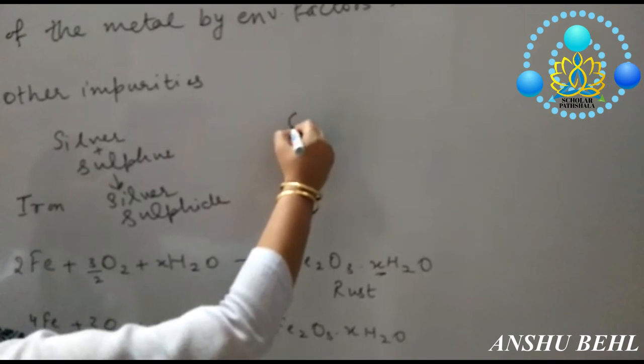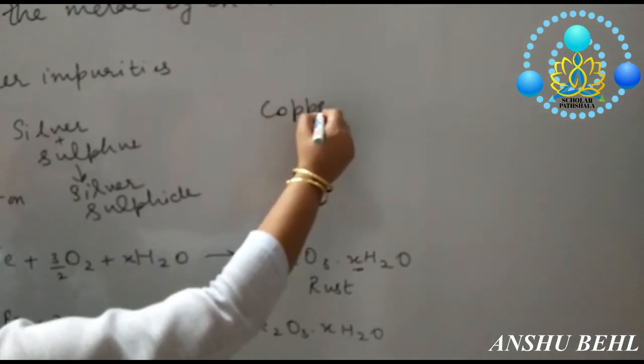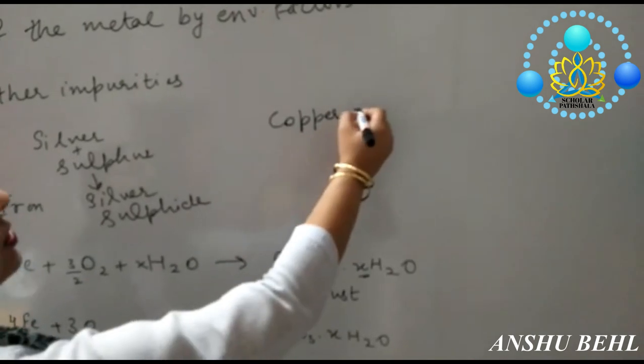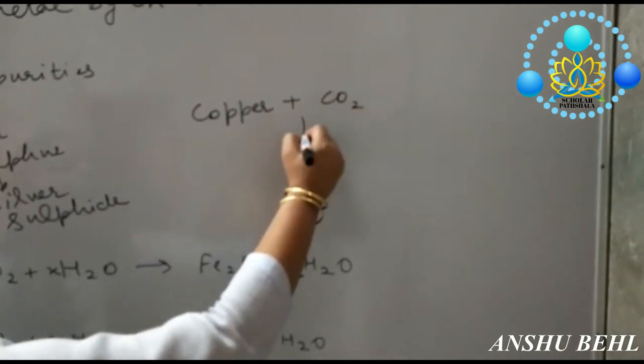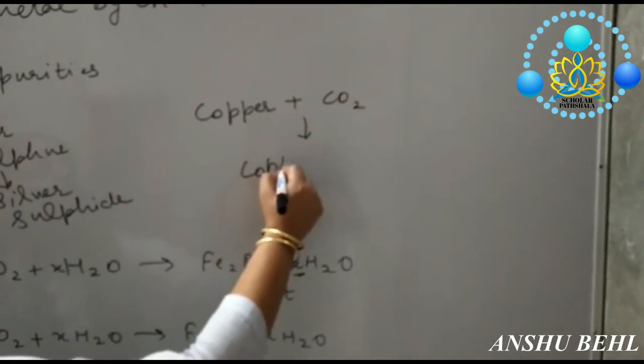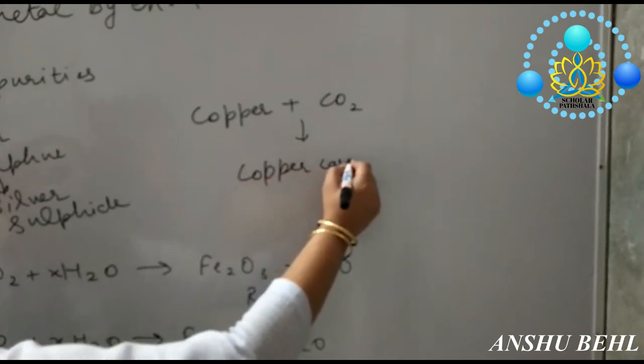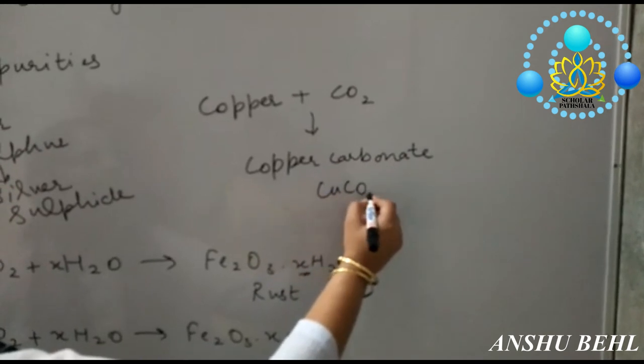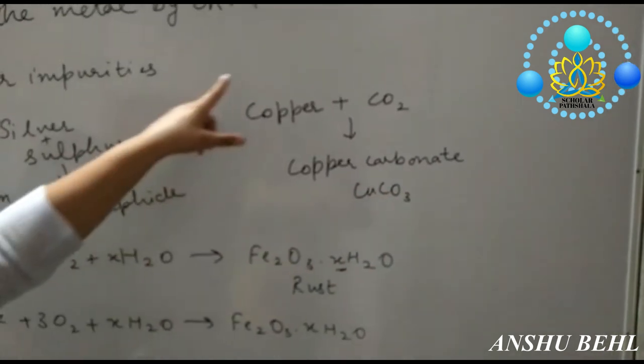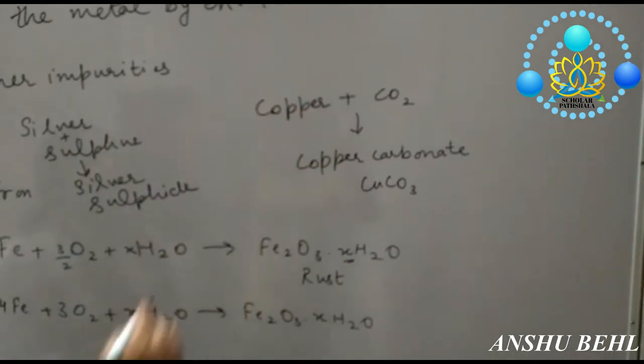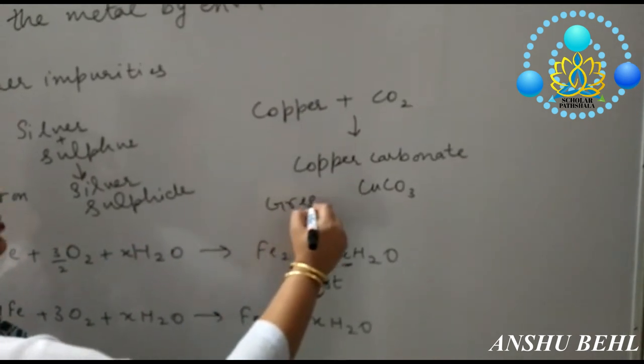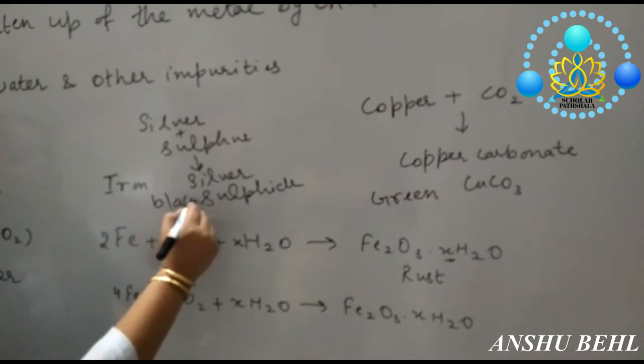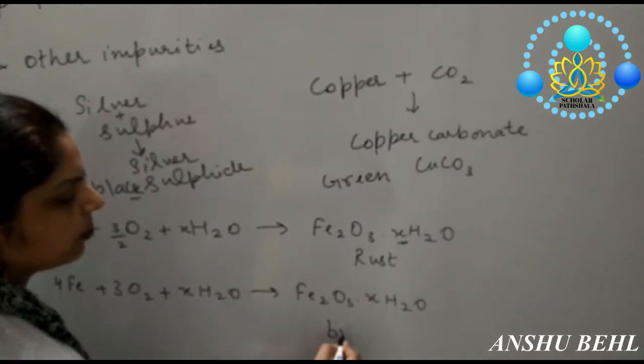After that, if you are taking any copper article, you can see it gets tarnished and its green color appears. It reacts with carbon dioxide to form copper carbonate. That all is due to corrosion, its green color appears, its black color appears, and its brown color appears.